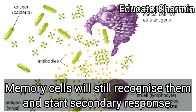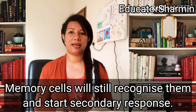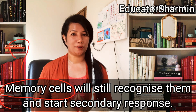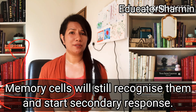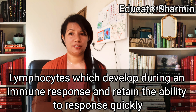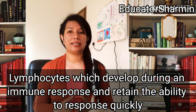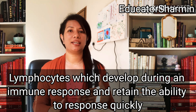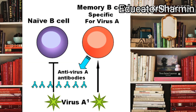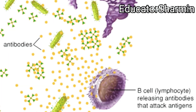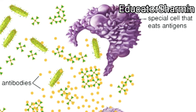When there are only minor changes in the viral antigens, memory cells will still recognize them and start a secondary response. Memory cells are lymphocytes which develop during an immune response and retain the ability to respond quickly when an antigen enters the body on a second or subsequent occasion.